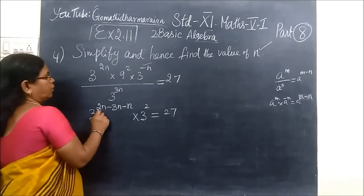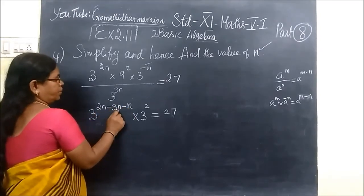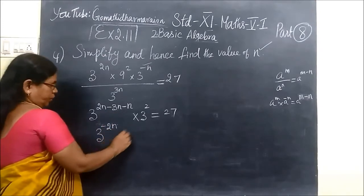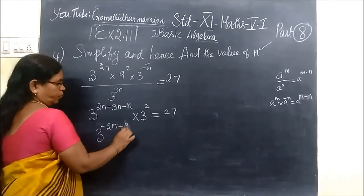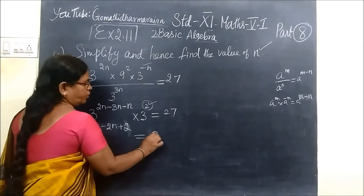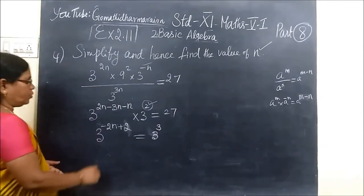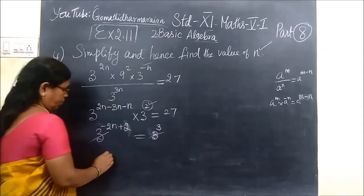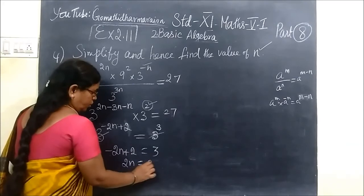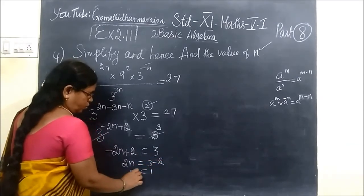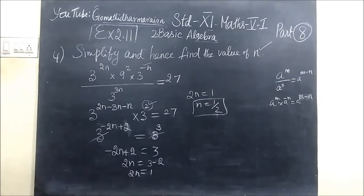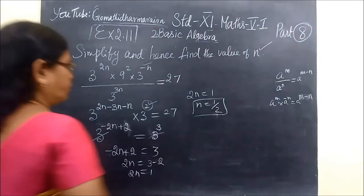So you get 2n - n - (-2n), giving exponent 2n + 2. And 27 can be written as 3³. Equating the powers: 2n + 2 = 3. So 2n = 3 - 2 = 1, which implies n = 1/2. The answer is n = 1/2.